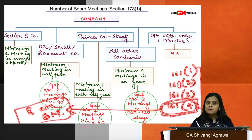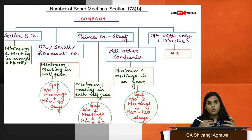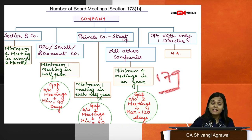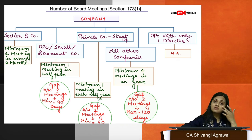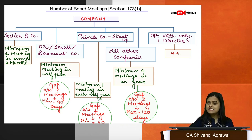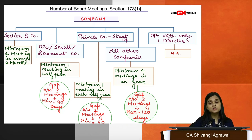Many matters are specifically reserved for board meetings. For the other three cases under section 161 you may have a resolution by circulation, but not for casual vacancy. Moreover, section 179 says certain powers are exercisable by the board only at a board meeting. Although decisions can be taken through circulation, it is still imperative that the board meet so directors are aware of what is happening and to take decisions specifically reserved for board meetings.